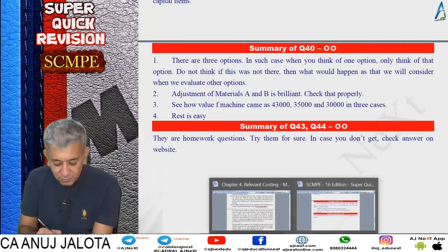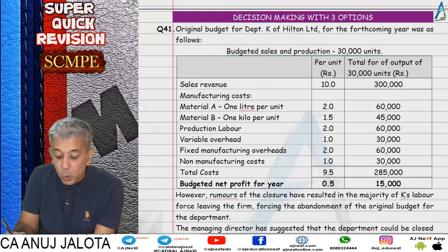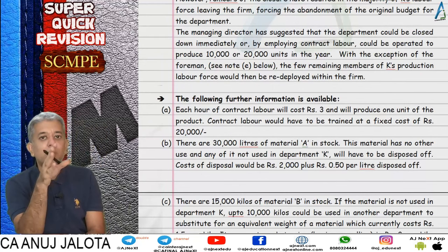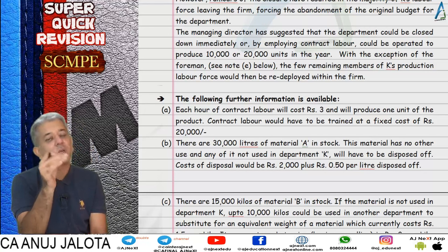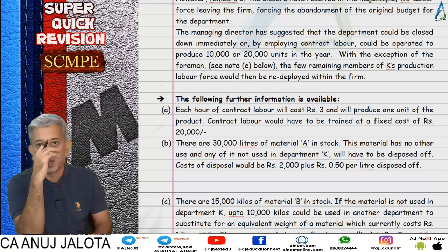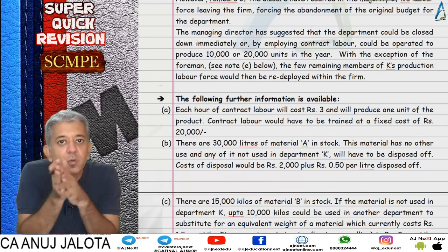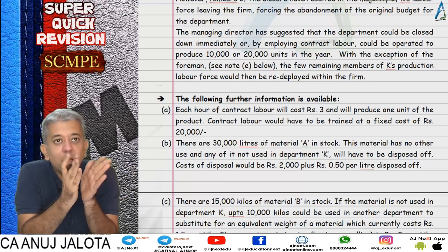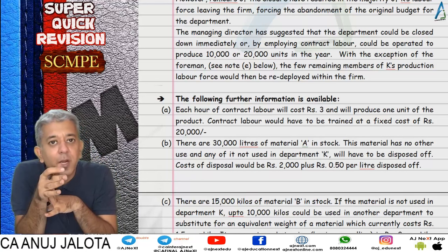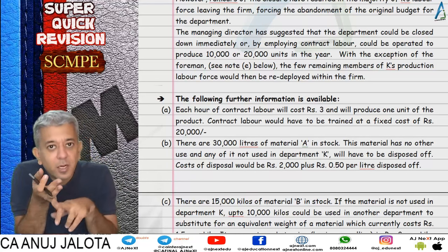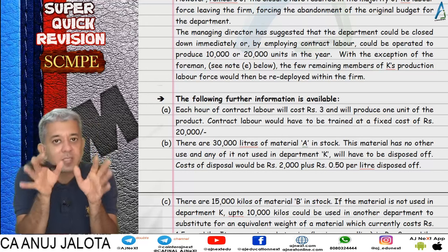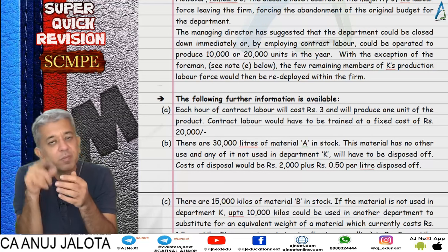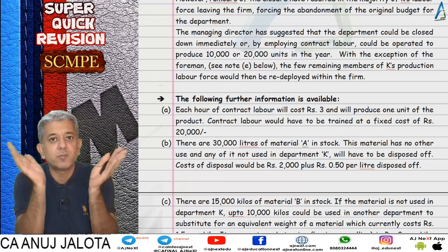Question 40: the only question where we evaluate three options simultaneously. The three options are: shut down the department, continue making 10,000 units, or continue making 20,000 units. These three options are not mutually exclusive in the usual sense - you can take 2 options at a time, find the better one, then compare with the third. Or take all three together as I solved it.